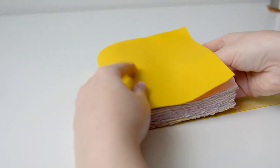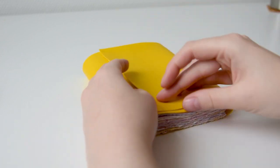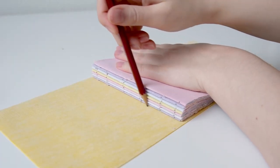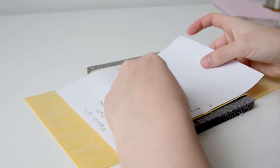Now measure out where in your cover fabric your text block will be placed and mark this with pencil. Align the crease of your second template with the line you just drew.